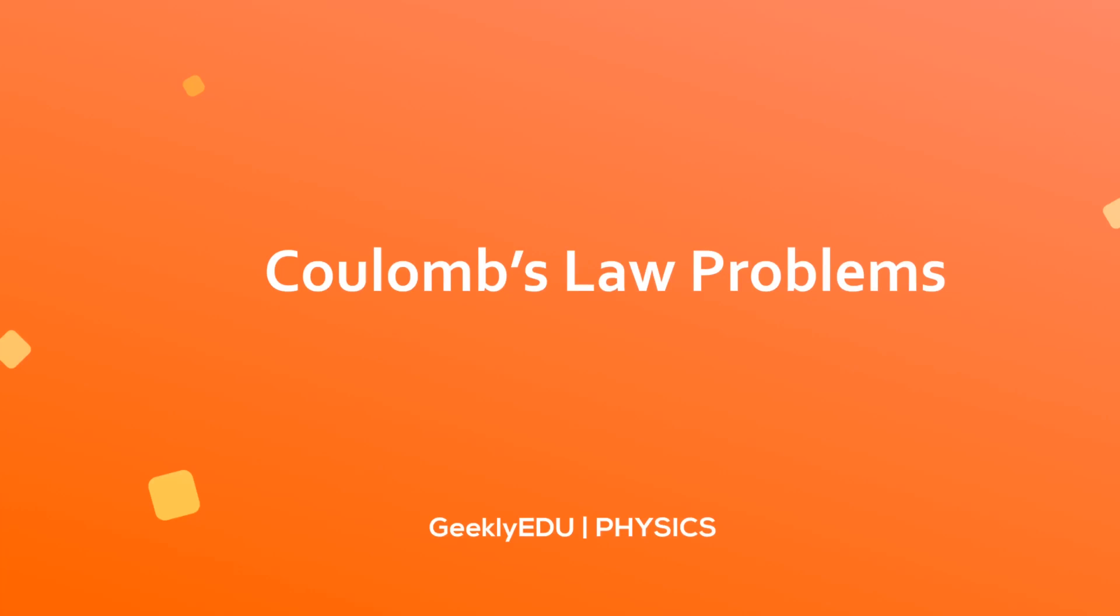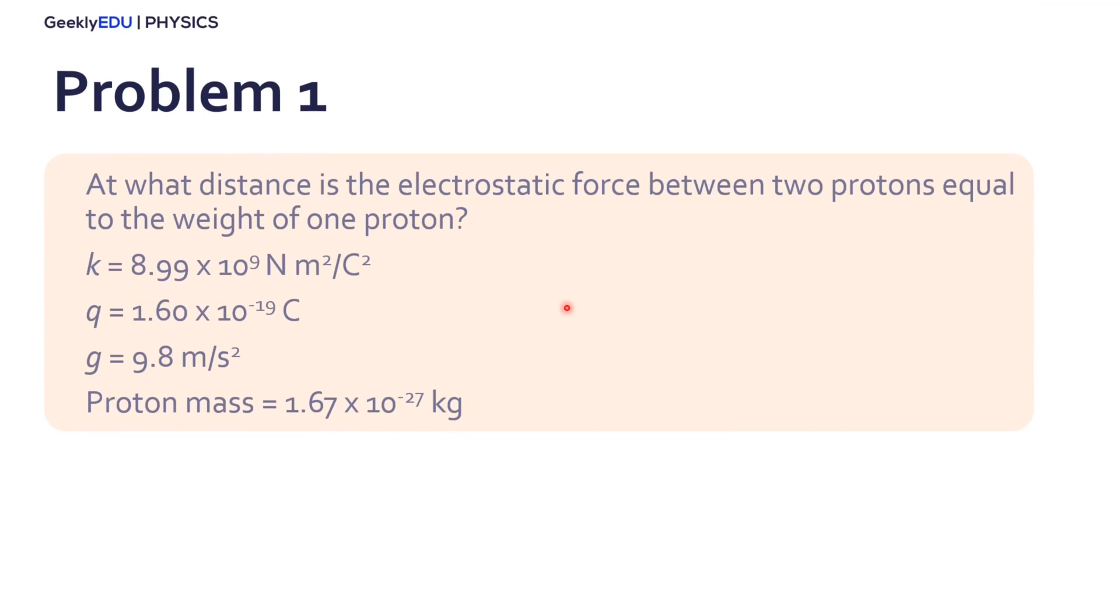In this lesson we're going through some example problems applying Coulomb's law. Let's go through problem number one. We want to know at what distance is the electrostatic force between two protons equal to the weight of one proton. I'm giving you here the proportionality constant k, the charge of the proton (because if it's just one proton, we know that the charge is the elemental charge), we have the gravity acceleration g, and the proton mass given.